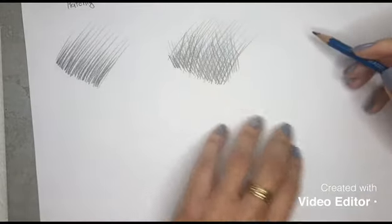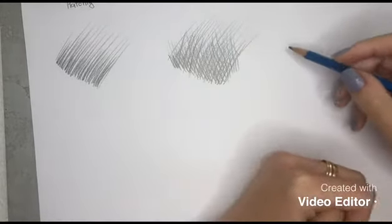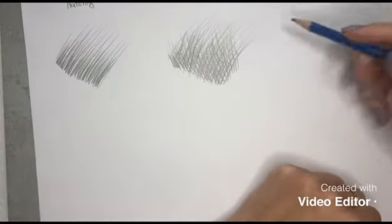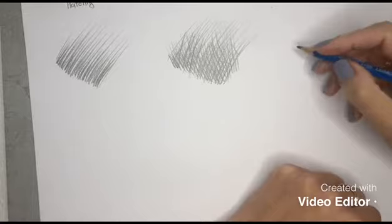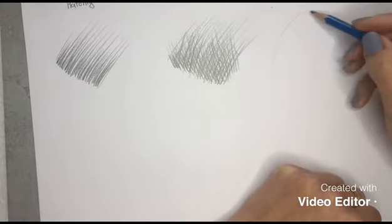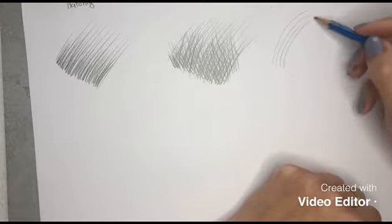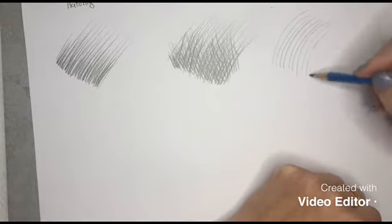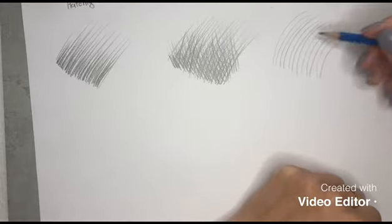Now our third stroke is contour. You remember how we do hatching, that was straight lines. This one, contour, means a little bit more rounded. Contour is like this, a little bit with your wrist like that.